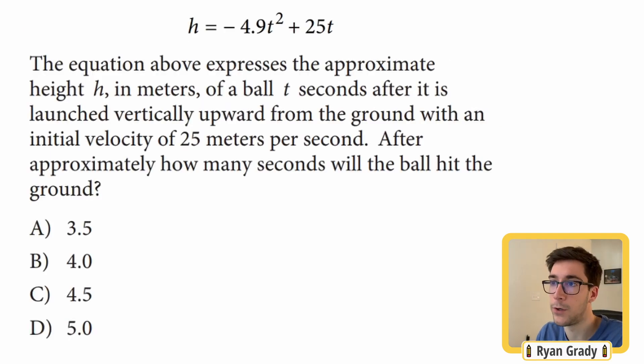Looking at the question, we have the equation here and it reads the equation above expresses the approximate height h in meters of a ball t seconds after it's launched vertically upward from the ground with initial velocity of 25 meters per second. All of this is basically just telling us what the equation says. We don't really need that.